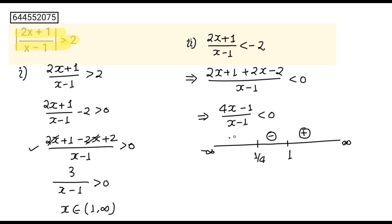And if you take any number less than 1/4, you will put at place of x, this will be positive. And what we need, we need less than 0. So less than 0 is between x belongs to 1/4 to 1.